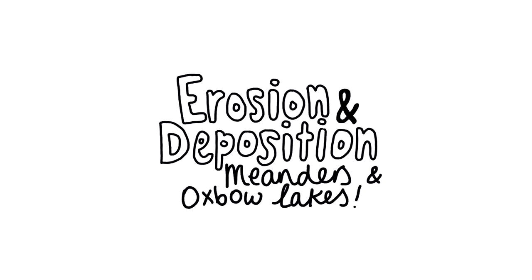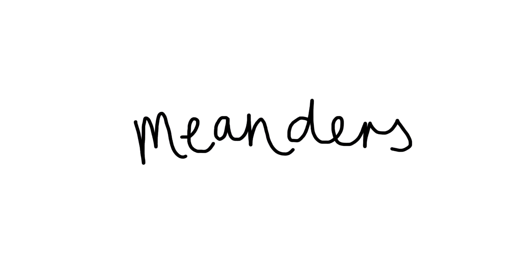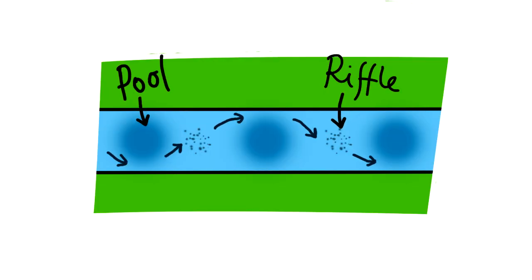The following landforms are created by a combination of erosion and deposition. Meanders occur in the middle and lower sections of a river. These curvy features are made due to alternating deep sections of the river, called pools, and shallower sections, called riffles.